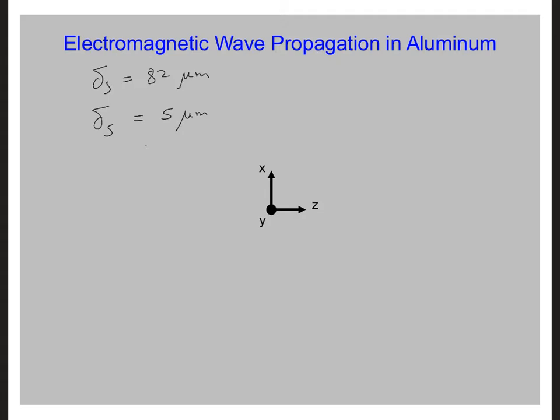Let's draw a sketch of what the electric field amplitude looks like versus depth into the aluminum. Consider a sinusoidal plane wave, and we'll look specifically at 1 megahertz.